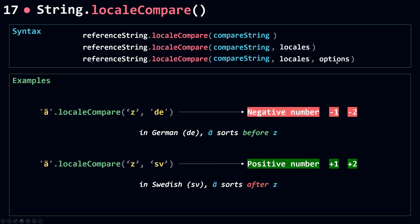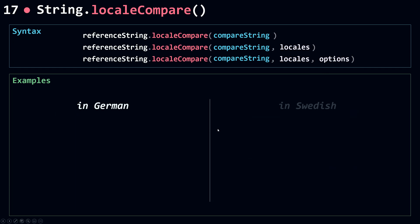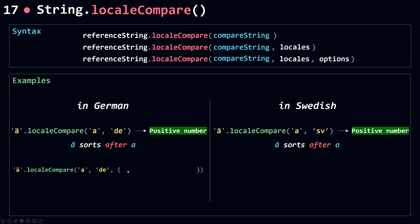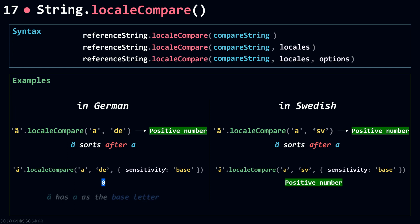The third parameter is options — an object you pass in to localeCompare. By the way, locales and options are both optional. For example, comparing 'Ä' with 'A': in both German and Swedish, Ä sorts after A, so I get a positive number in both cases. Now if I pass in an options object with sensitivity set to 'base', this means I want to compare based on the base letter only. In German, Ä has A as its base letter, so I get zero. But in Swedish, Ä and A are separate base letters, so I get a positive number. And that's it for localeCompare.